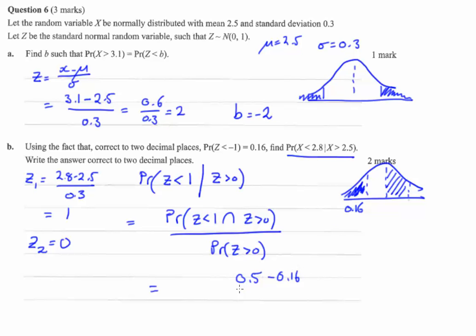Over the probability that z is greater than 0. Well, it's normal, so the probability it's greater than 0 is 0.5. That gives us 0.34 over 0.5.